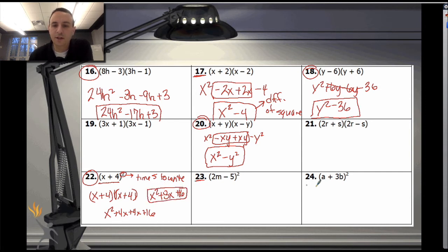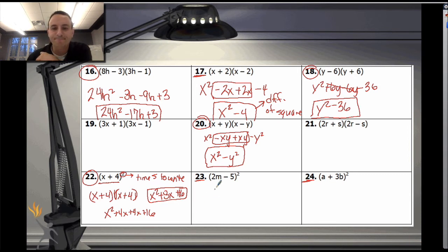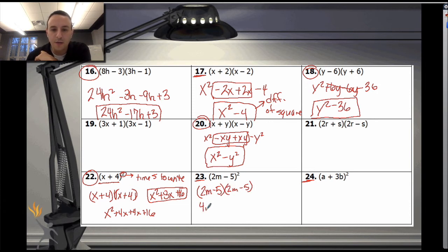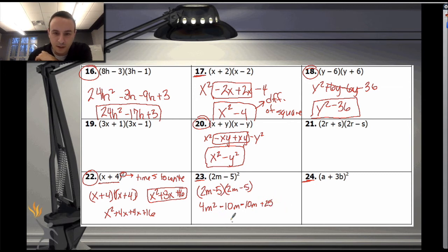Try problems 23 and 24 — pause the video. For problem 23: (2m minus 5) squared becomes (2m minus 5) times (2m minus 5). Distributing: 2 times 2 is 4m squared; 2 times negative 5 is negative 10m; negative 5 times 2 is another negative 10m; and negative 5 times negative 5 is positive 25. Combining: 4m squared minus 20m plus 25.